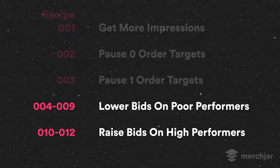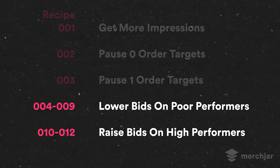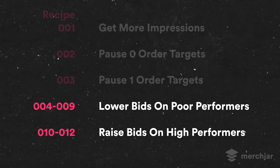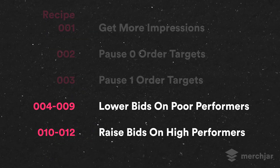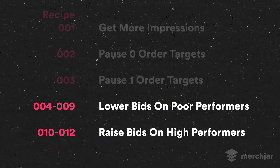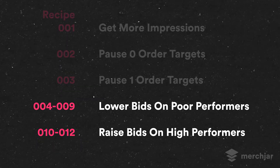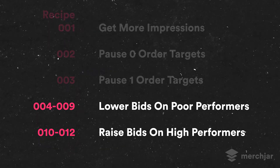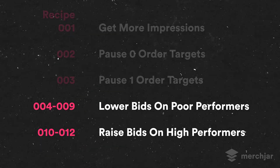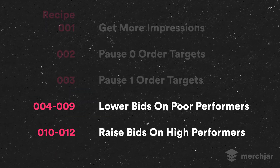Recipes four through twelve are all related to raising or lowering bids on targets and keywords based on their ACOS. While recipes one through three are fairly straightforward, bid changes require more recipes to get better optimization and are a little more complex. Recipes four through nine are all related to lowering bids on keywords and targets that have a high or very high ACOS, and these recipes are segmented by order volume.